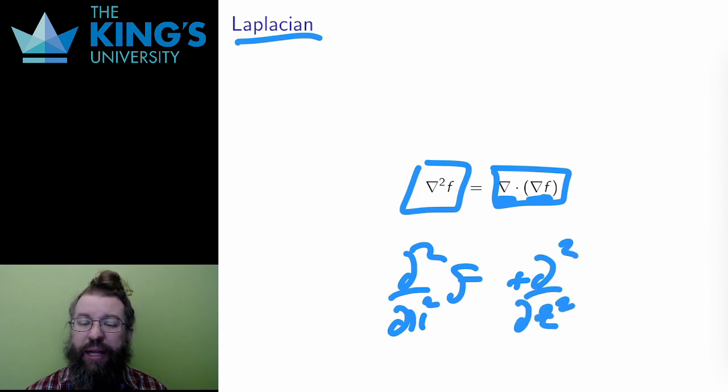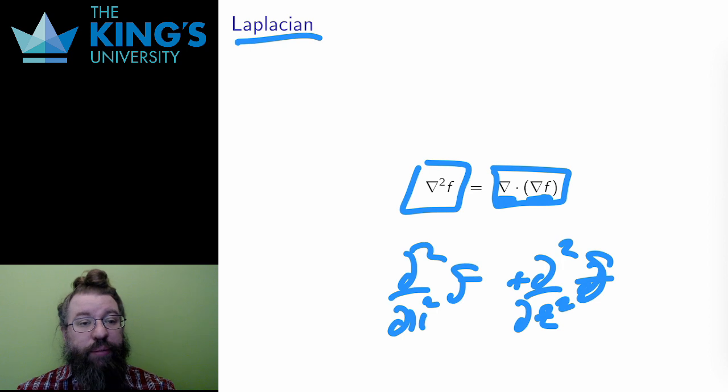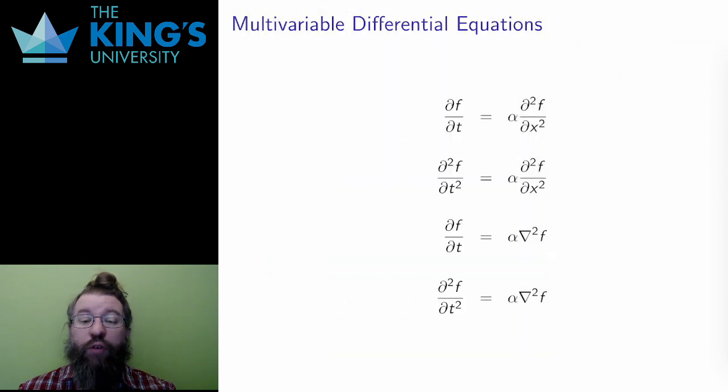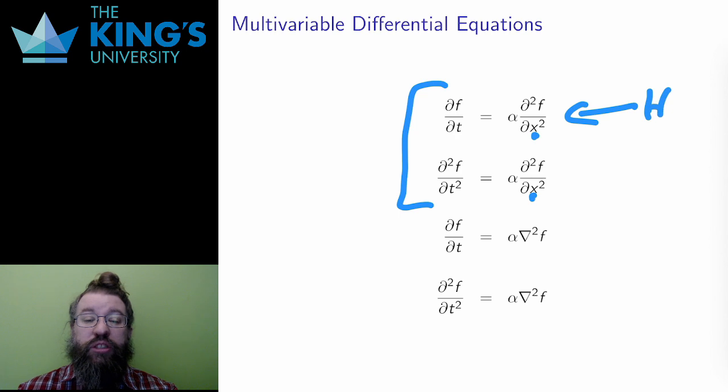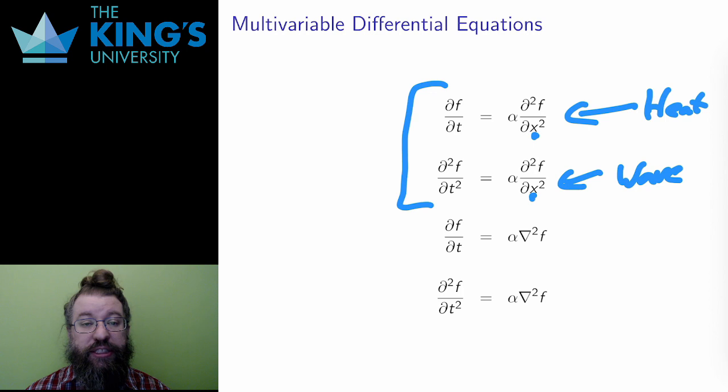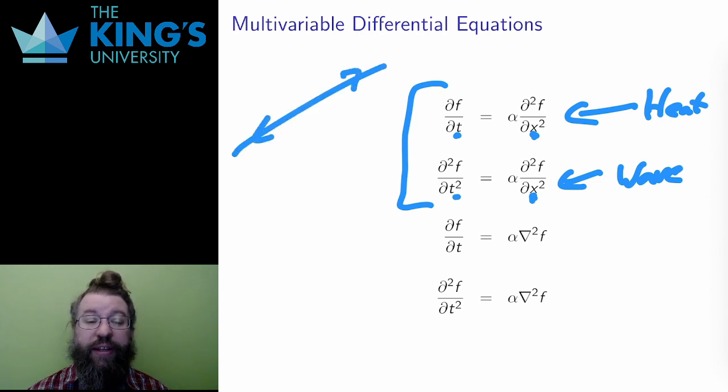Why is the Laplacian important? Well, it's the key ingredient in many important multi-variable differential equations. On the slide here, I start with two equations that have only one variable of position, x. The first is the heat equation, which governs the diffusion of heat, and the second is the wave equation, which governs propagation of waves. In each, the function depends on t and x, time and then a single variable of position. This is heat diffusion along a line or wave propagation in a single direction.